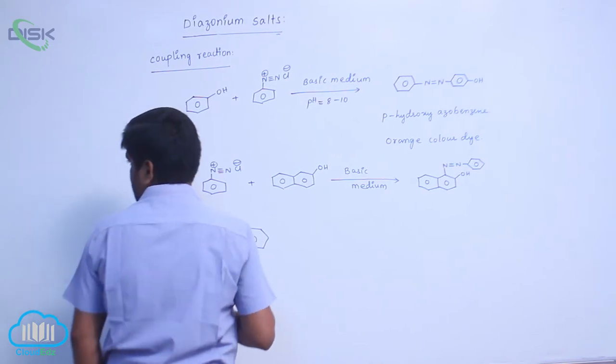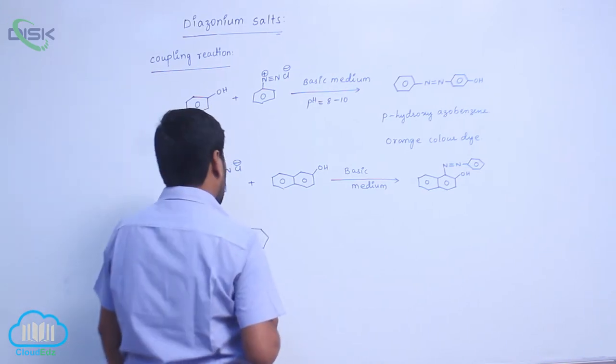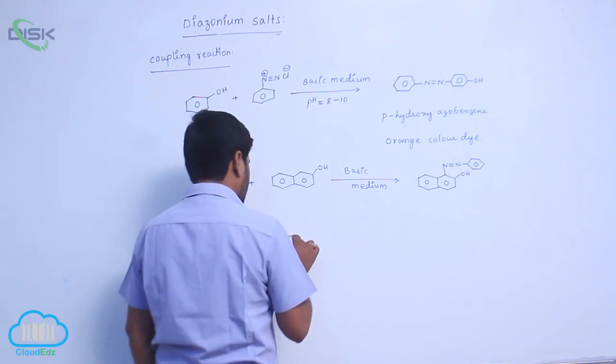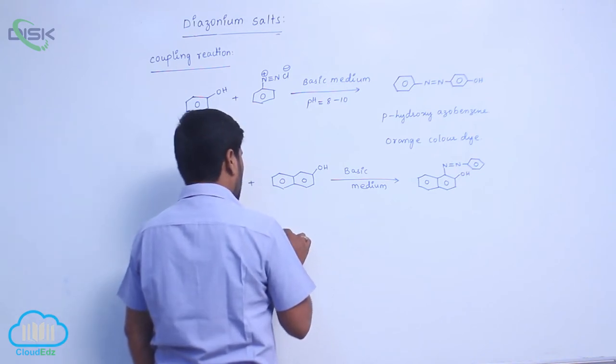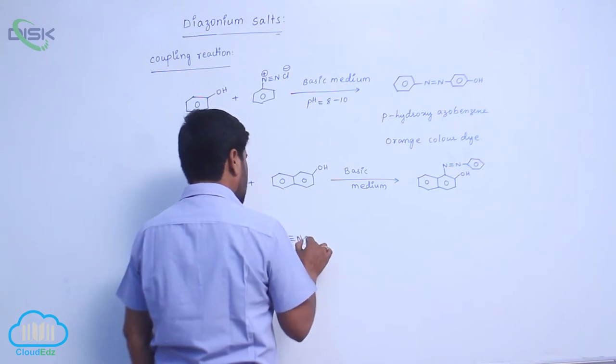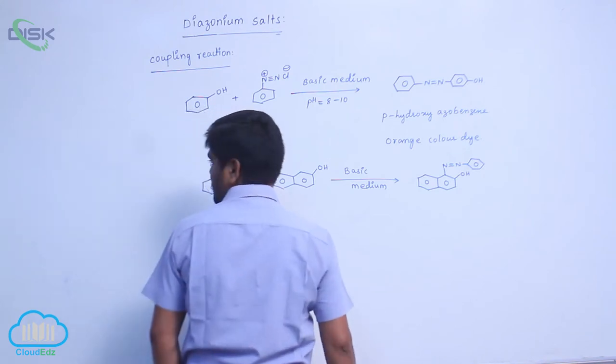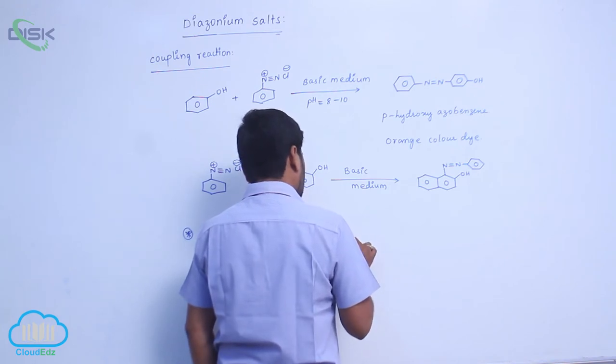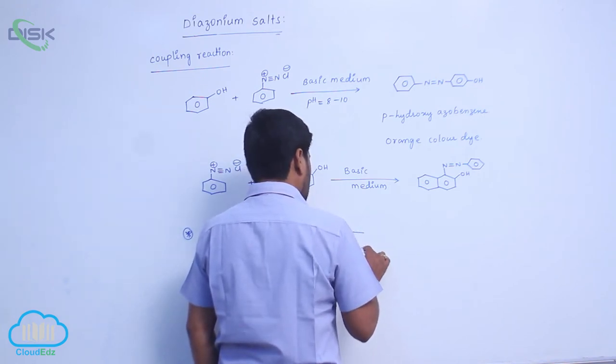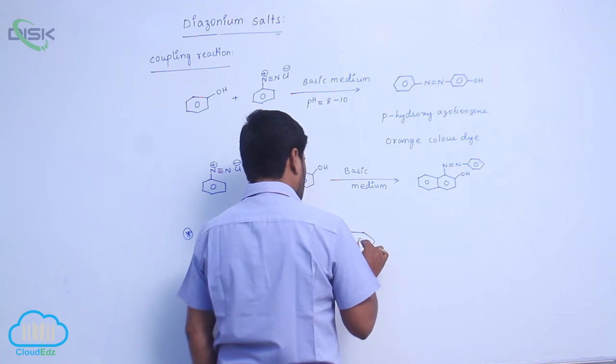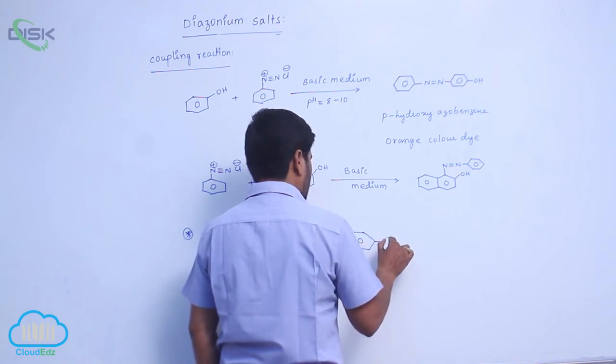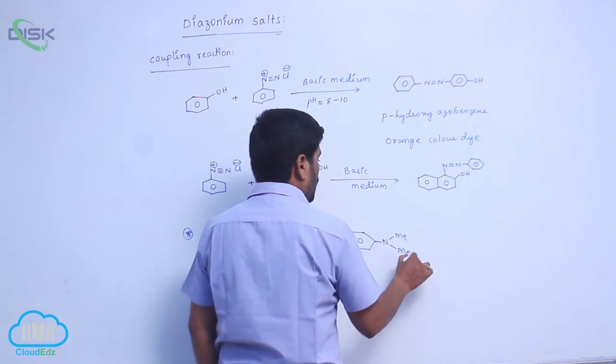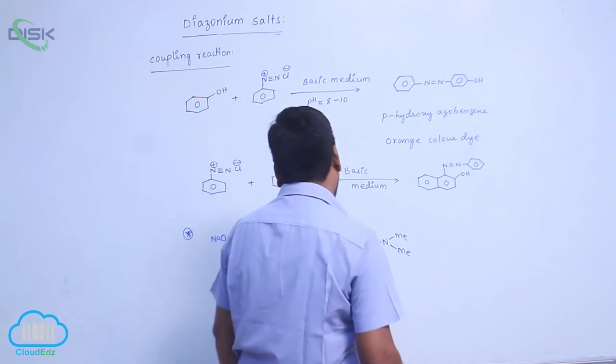This is sodium salt of benzoic acid with diazonium (N≡N+ Cl-). This reacts with N,N-dimethyl aniline, which has methyl groups attached.